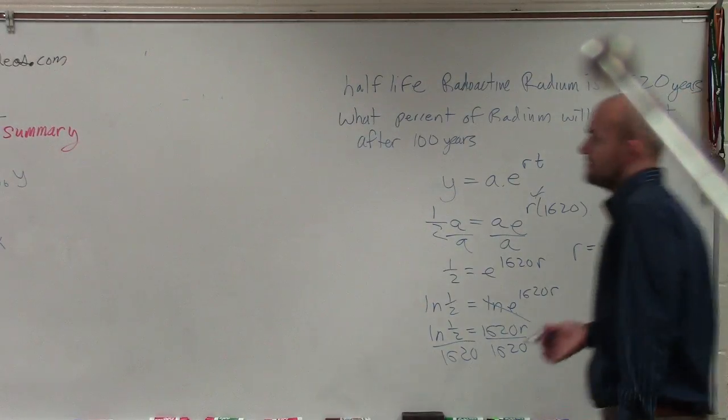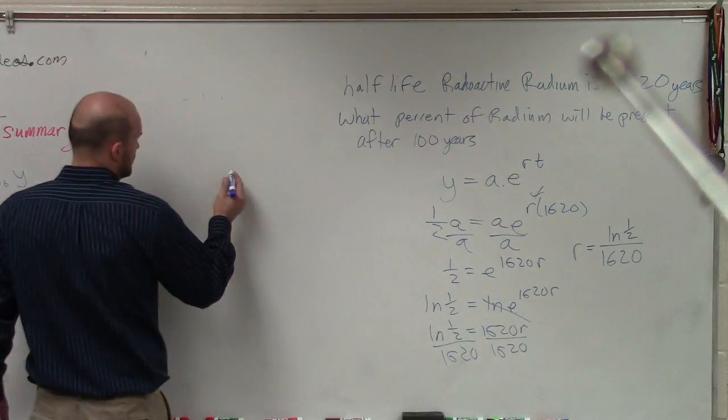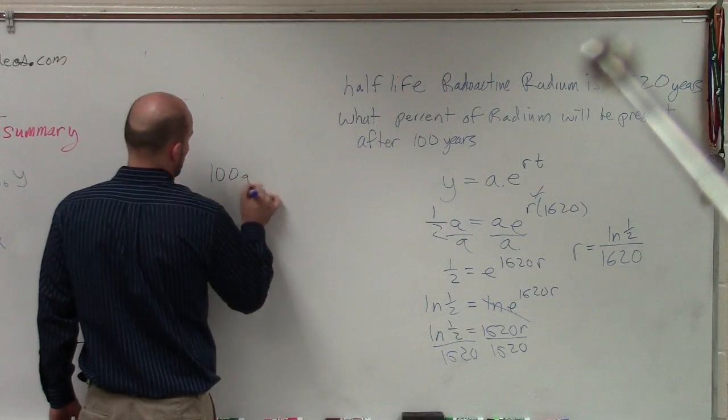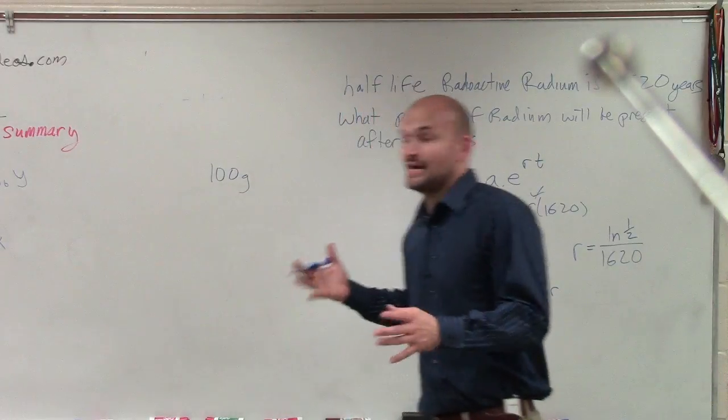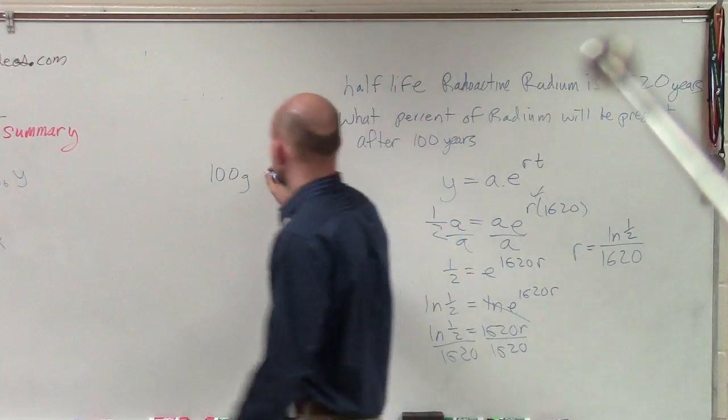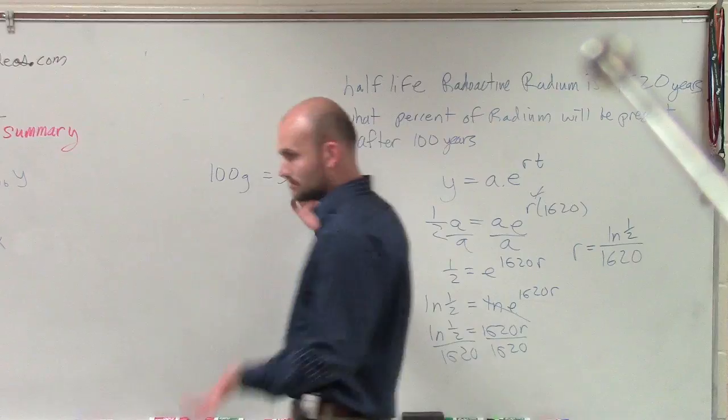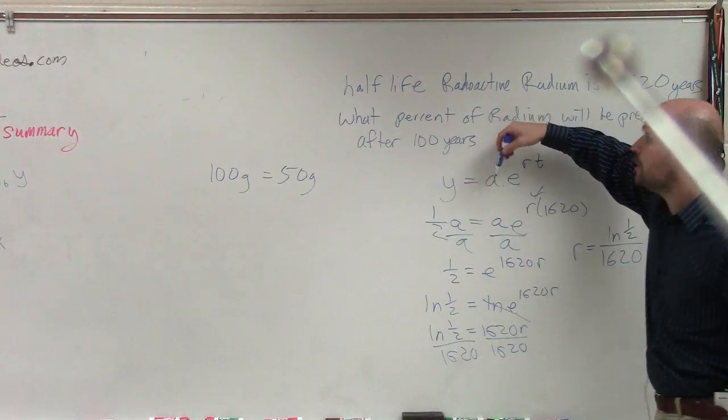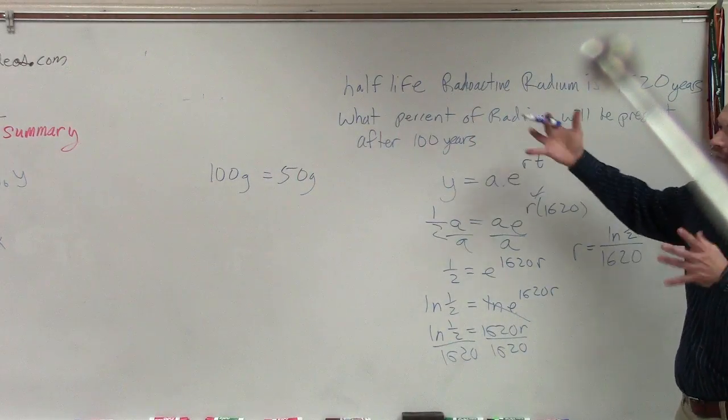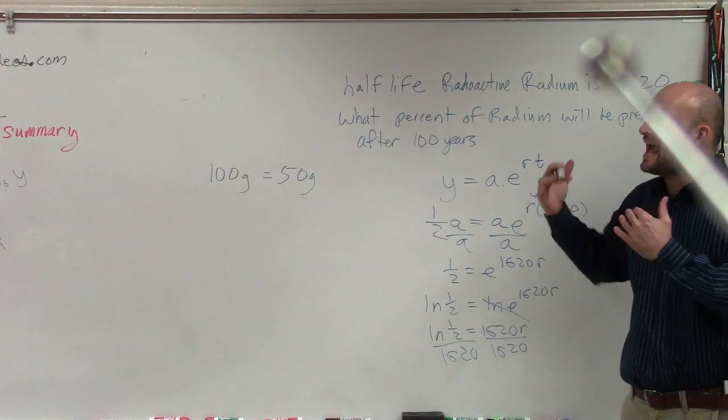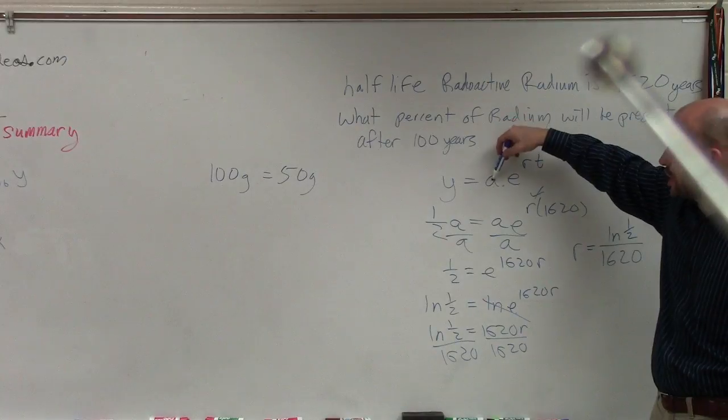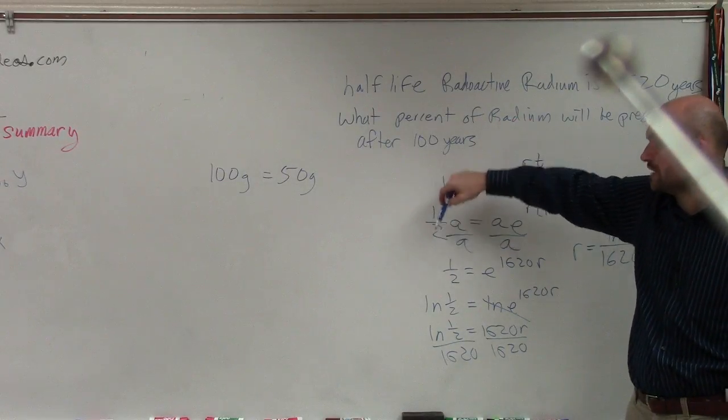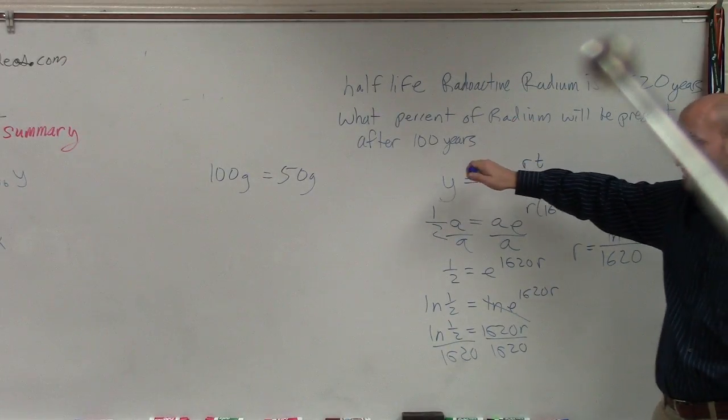Because it says, if I say you have 100 grams of something, and I say, well, you're going to have half of that, well, then obviously you're going to have 50 grams, right? Well, yeah. But the thing is, we don't know how much radium we have. What they're saying is, what the half-life represents is you're going to have half of this substance. So you don't know what A is, but you know that half of it is 1/2 times A. Does that make sense?